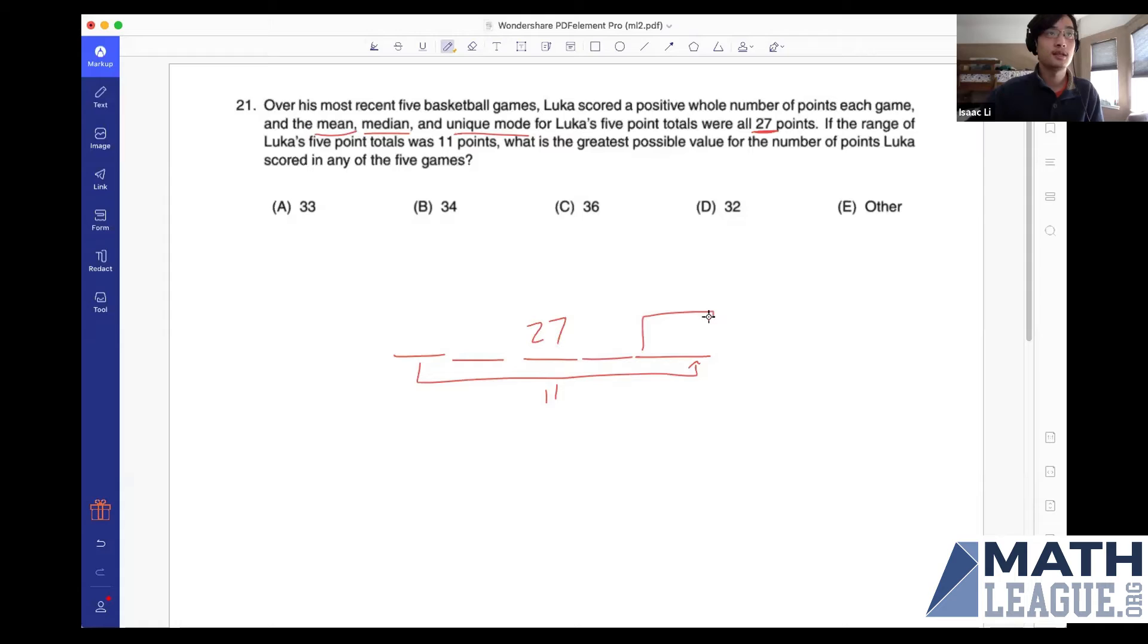If we want to maximize this number here, then we want to make all the other numbers as small as possible. So let's start with this fourth number here. This fourth number, in order to be as small as possible, must be 27 because it can't be any less, so we put a 27 here.